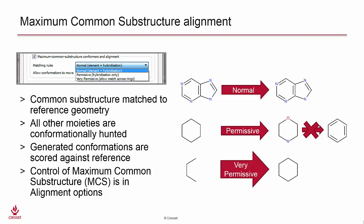Within the panel, we can also control how the routine handles hybridization and element differences. Normal performs a strict match of substructure. Ring atoms can only match other ring atoms. With permissive, the substructure matches ignore element, but matches on hybridization.